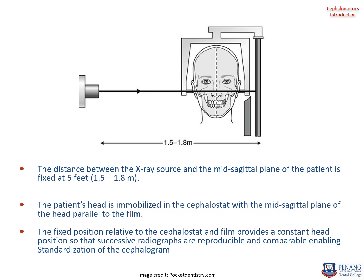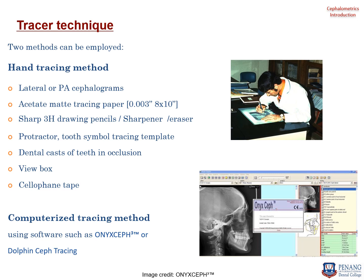The film cassette can be either a conventional film-based one or a phosphor plate. The distance between the X-ray source and the mid-sagittal plane of the patient is always fixed at five feet. This prevents excessive magnification and distortion, and standardizes successive radiographs taken on the same patient, allowing comparison of pre-treatment, post-treatment, and growth changes. The patient's head is immobilized in the cephalostat with the mid-sagittal plane parallel to the film.